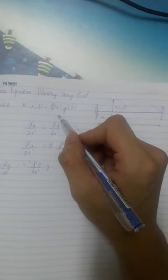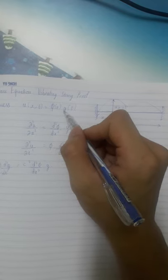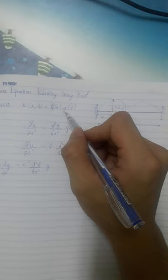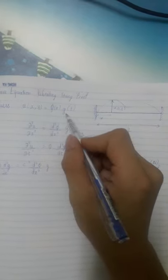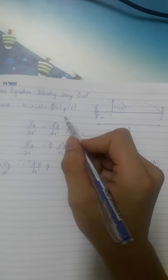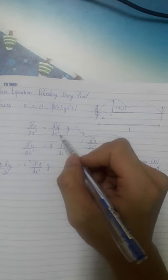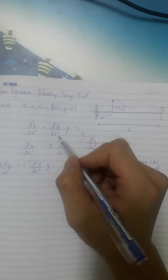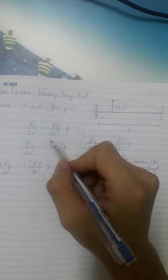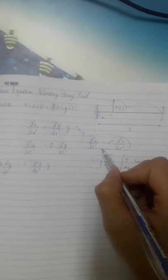I'll call it phi times q. So I'm going to assume u has this form, and now what we need to do is process this into the wave equation and see what we get.